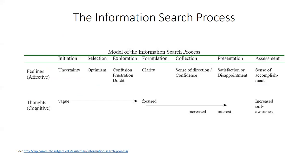Before we get into the details of assignment design, it's really helpful to think about the perspective of your students and how they approach research. I want to return to Kulthau's model of the information search process. Using this model as a framework, we can see that students experience research assignments in six different stages. The first is initiation, when a student first becomes aware of a lack of knowledge — this is when students tend to feel uncertain or anxious. The next stage is selection, when a student has identified a general topic, and initial uncertainty turns into optimism. The next stage is exploration, when students encounter information that is inconsistent or confusing, which can cause uncertainty and affect their confidence.